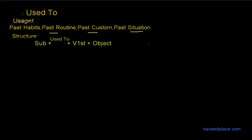Now, let's see the structure of 'used to.' The structure is: subject plus 'used to' plus first form verb plus object.